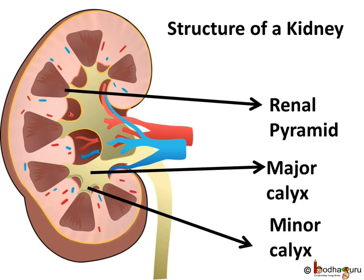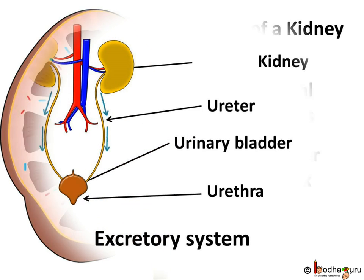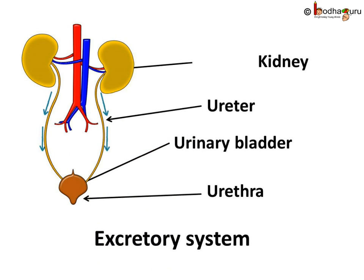All the urine is dumped into small chamber-like parts called minor calyces, and 2-3 minor calyces join together to form a major calyx. From the major calyx, urine flows into the renal pelvis from where the ureter originates. The ureters then carry urine to the urinary bladder.